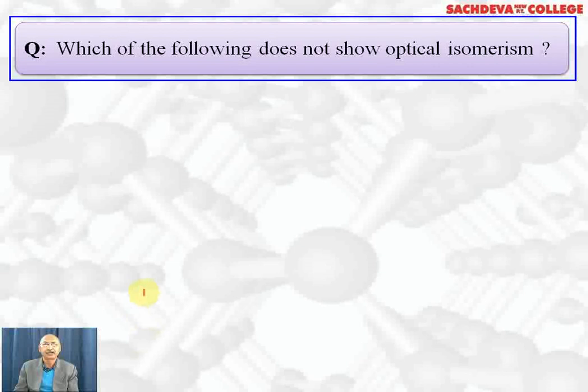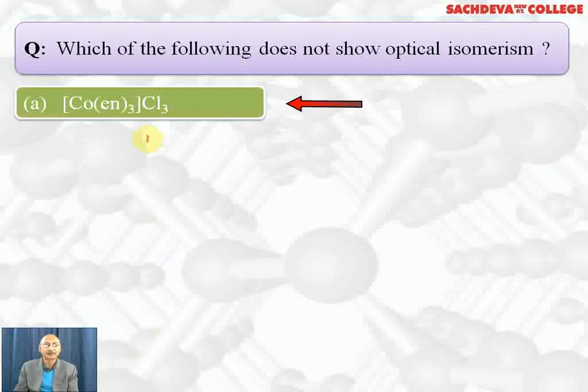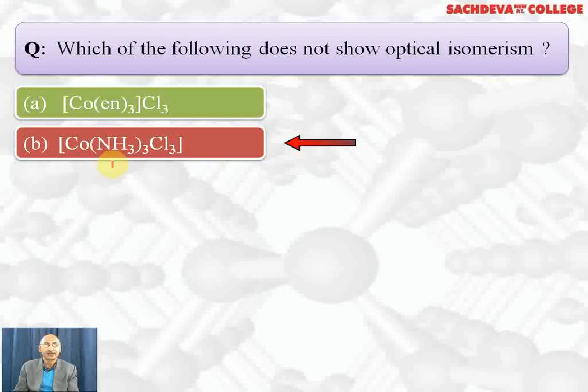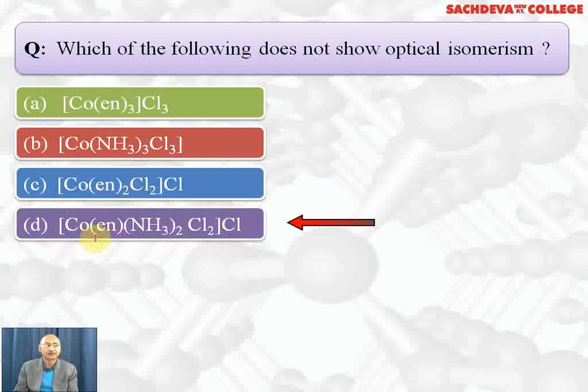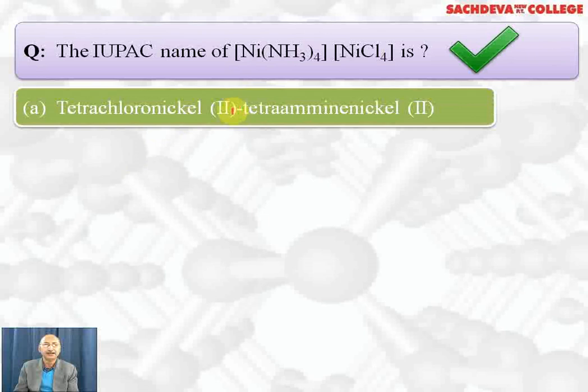In this multiple choice question, which of the following does not show optical isomerism? Part A will show optical isomerism because it has a bidentate ligand. Part B will show geometrical isomerism — facial and meridional — but cannot show optical isomerism. Part C will show optical isomerism because there are bidentate ligands, but only the cis form; the trans form will not. Part D will show optical isomerism because of the bidentate ligand. So the correct answer is B — it shows geometrical isomerism but not optical isomerism.